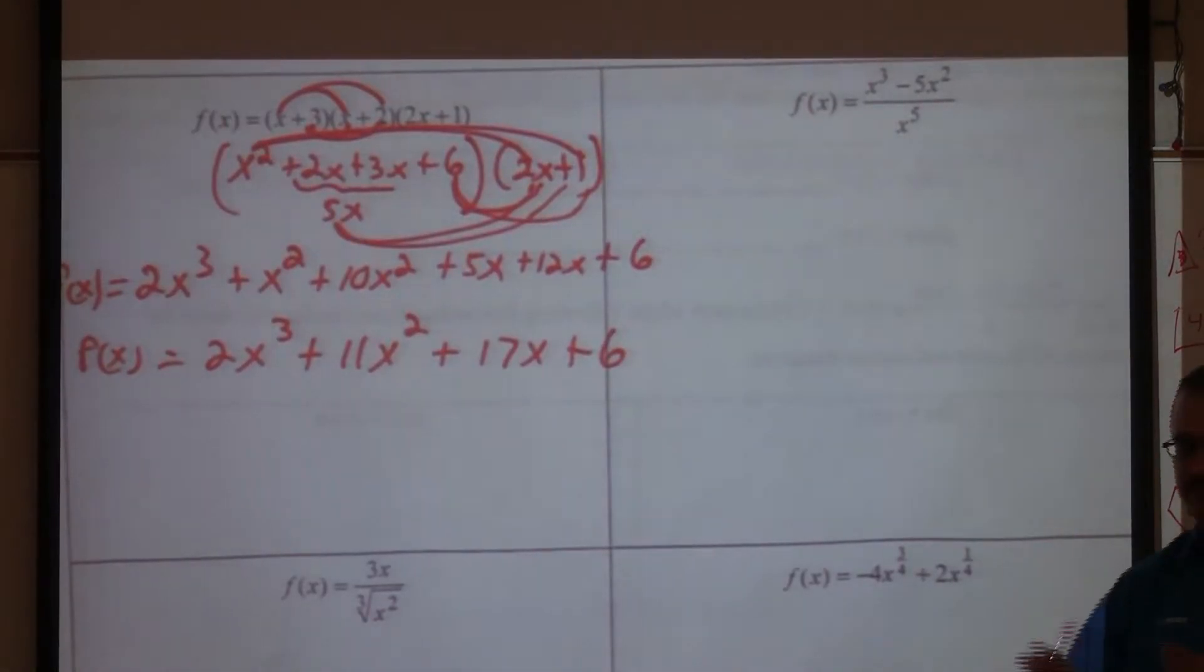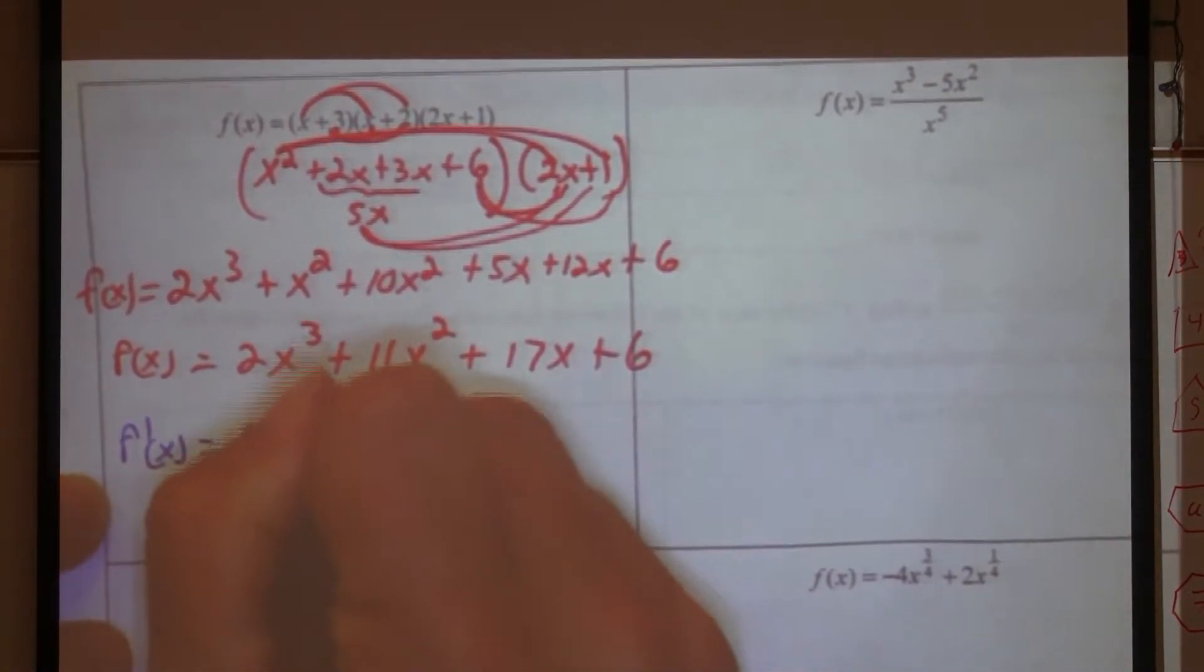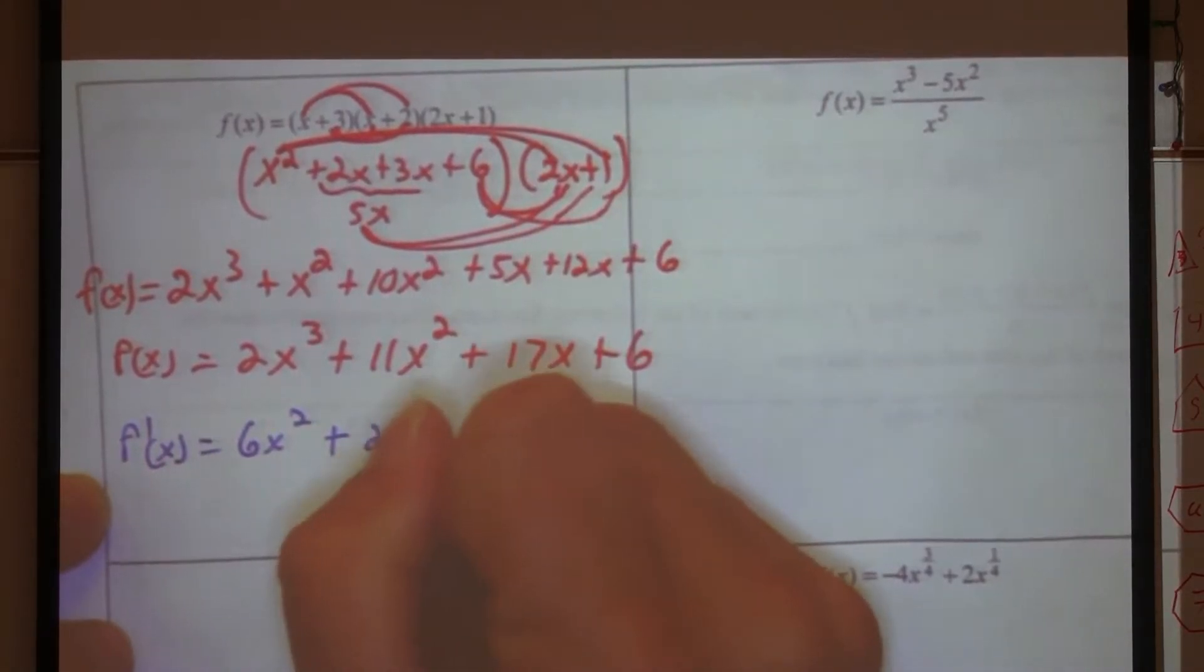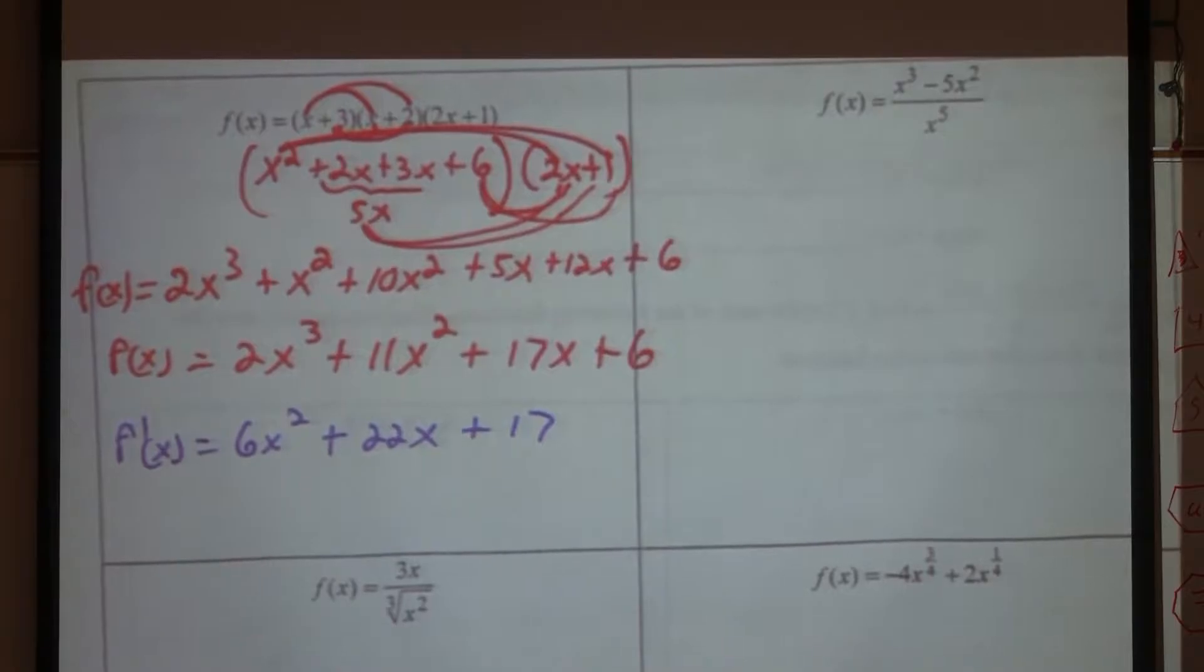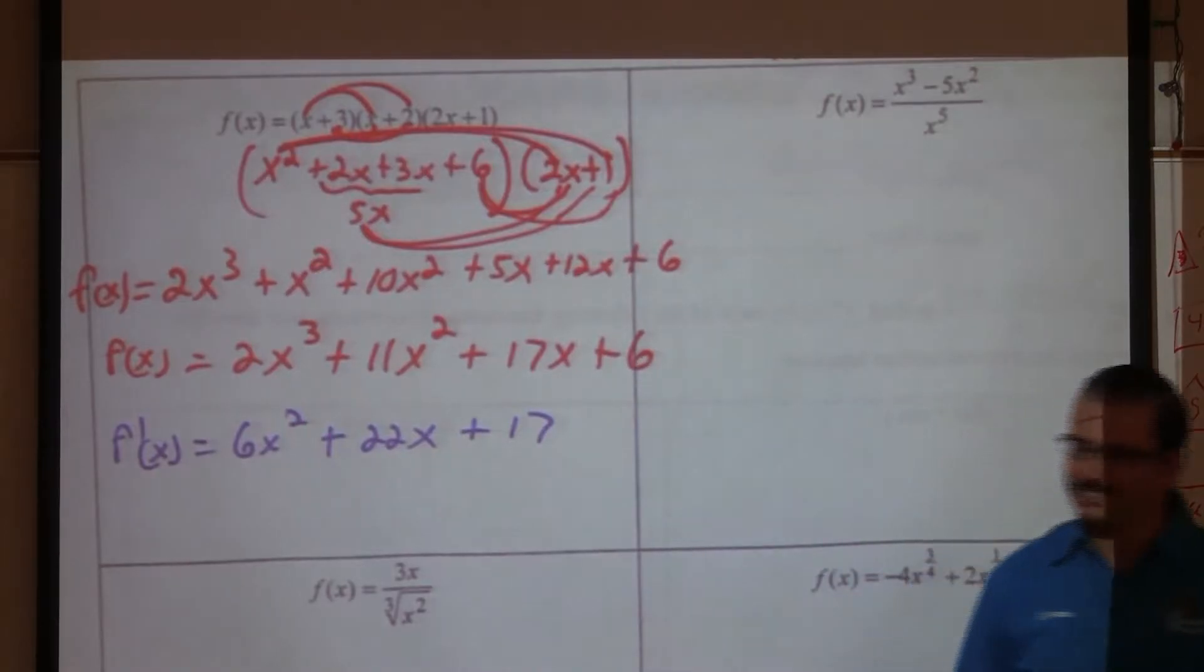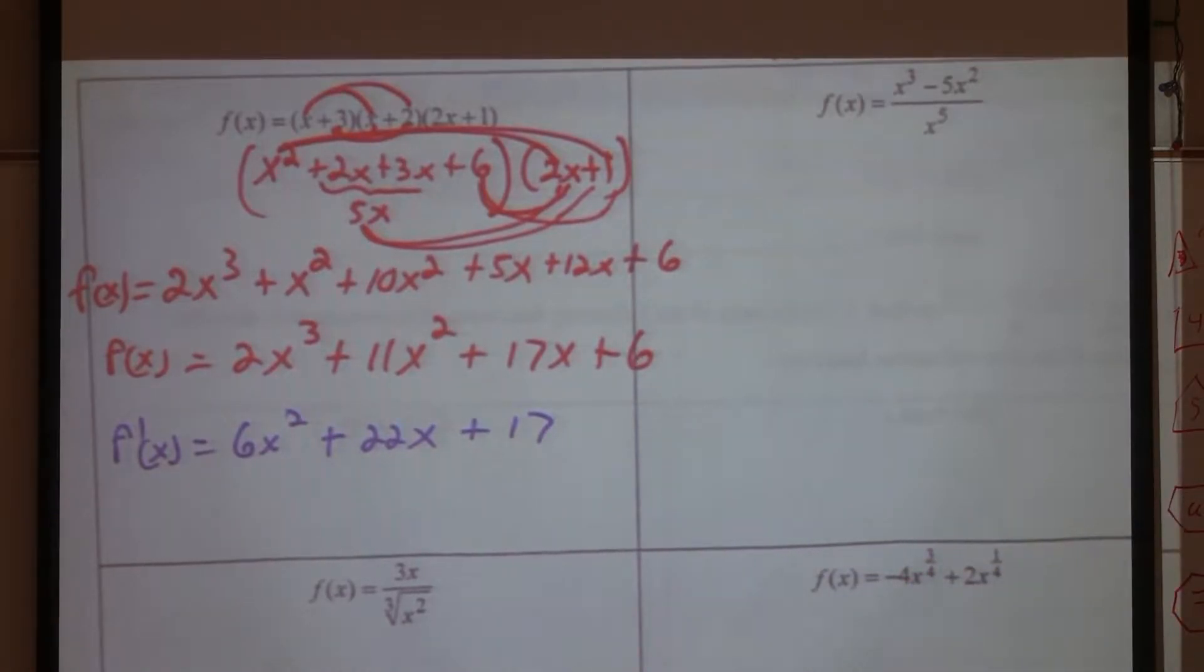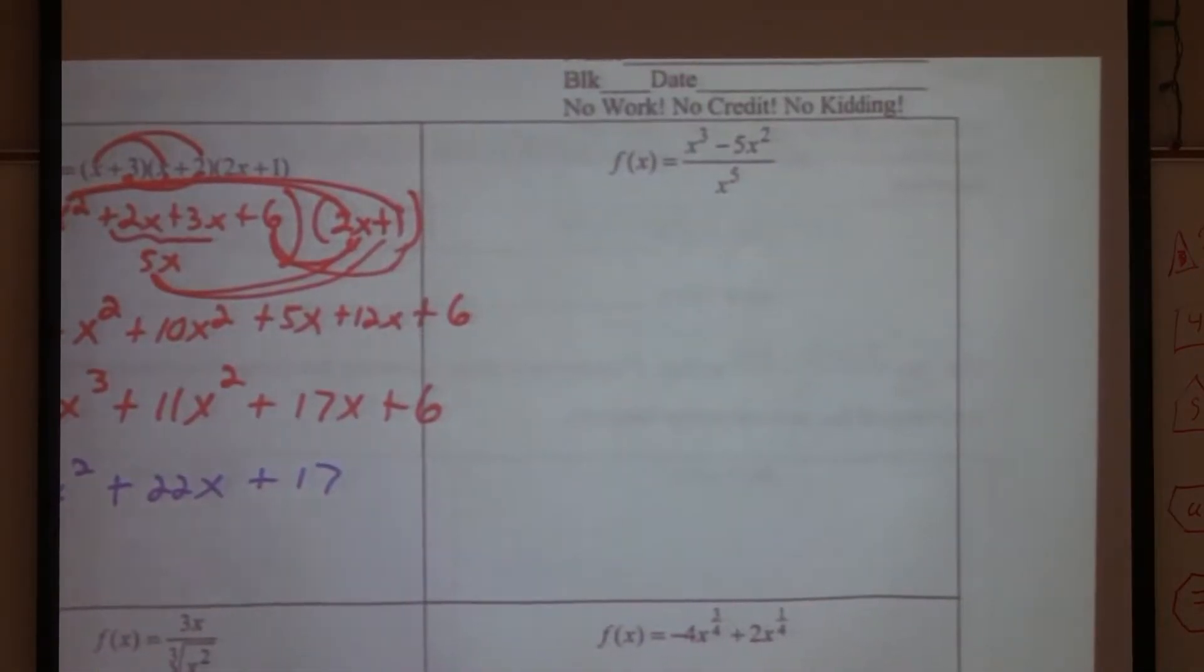Have we taken the derivative yet? No. All I did was rewrite the function, right? What's my derivative going to be? Quick. Six x squared. Twenty-two x. Faster. Plus seventeen. Plus six? No. Why not? The derivative of a constant is zero. Beautiful. Super easy? All right. Let's try another one. More practice, okay? Different variations.